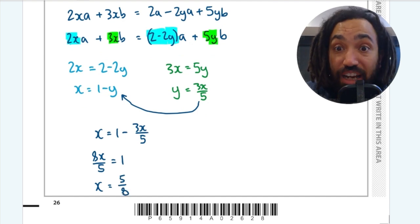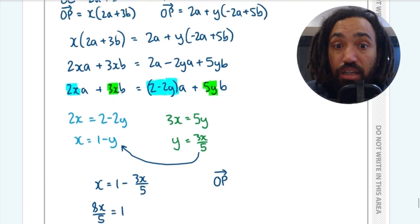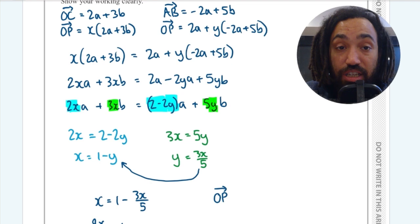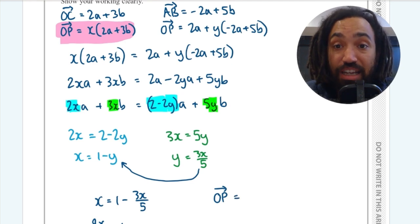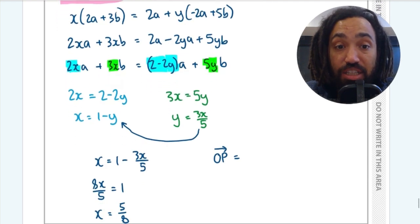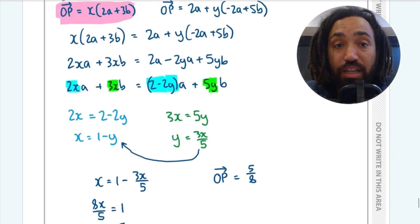So now I know the fraction of that original OP vector that I first created in terms of OC. And you can see it there. I'm going to highlight it now in pink. That is an expression for OP and it's in terms of X that fraction. So I could write that OP is equal to X which is 5 over 8 open brackets 2A plus 3B.